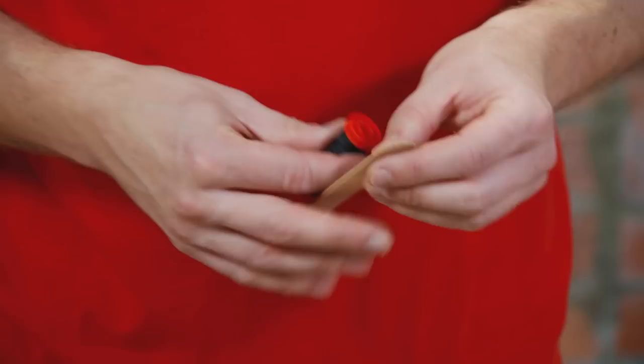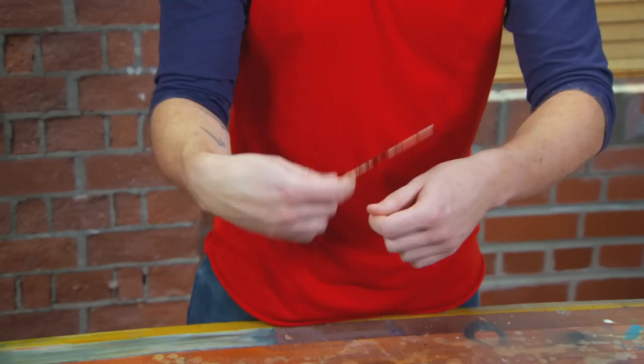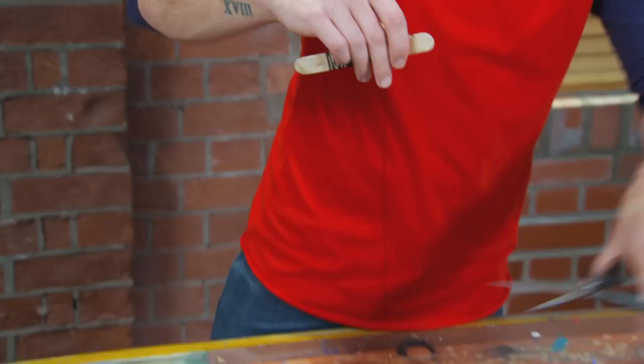Now I need to add some string in order to fly my kite. So for that, I'm just using some cotton thread and a large lolly stick. Just going to tape one end onto the lolly stick, and then I'm going to wrap the thread round. There we go. That's good for length. Just take that off.